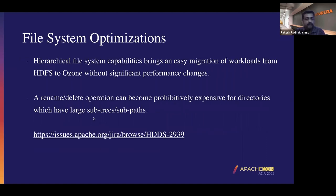Now we'll talk about the file system optimization we have done. It brings an easy migration of workload from HDFS to Ozone — a workload that gives significant performance with HDFS can be migrated to Ozone without much performance degradation. The rename and delete operations are probably really expensive in the object store world. With file system optimizations, we have implemented order-of-one complexity performance optimizations without worrying about the underlying subtrees.